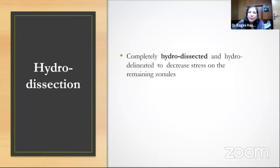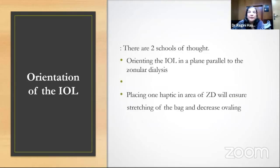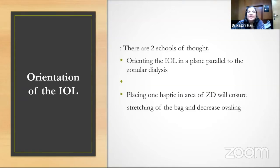The problem with hydrodissection is that fluid can pass through into the vitreous, hydrating it and increasing zonular stress by increasing the bulk of the subluxated nucleus — like a water-filled balloon causing stress. Hydro procedures can be done with very little fluid and very carefully, or avoided altogether. Regarding IOL orientation, the loop of the IOL itself can act like a CTR ring, stretching in the direction of the dialysis to centralize the lens. Orienting the IOL loop parallel to the zonular dialysis can be a big advantage.